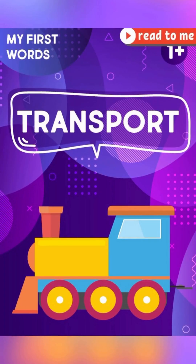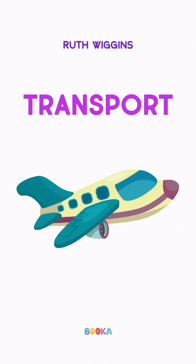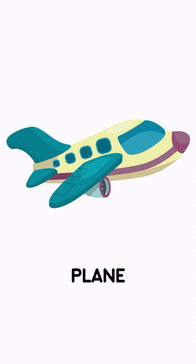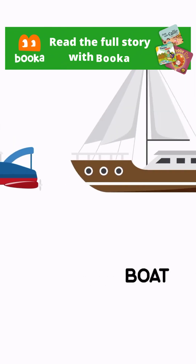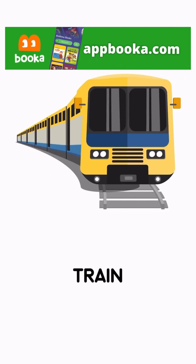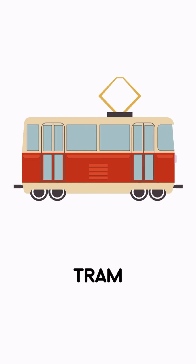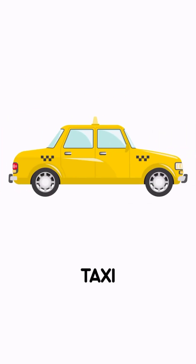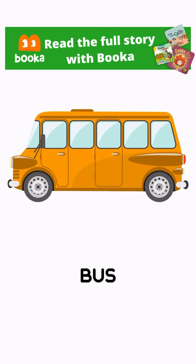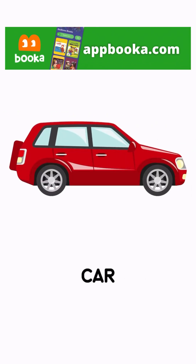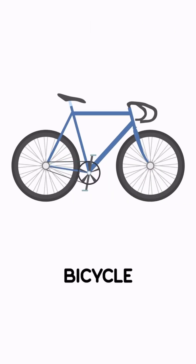My First Words by Ruth Wiggins: Transport. Plane. Ship. Boat. Train. Tram. Taxi. Bus. Car. Motorbike. Bicycle.